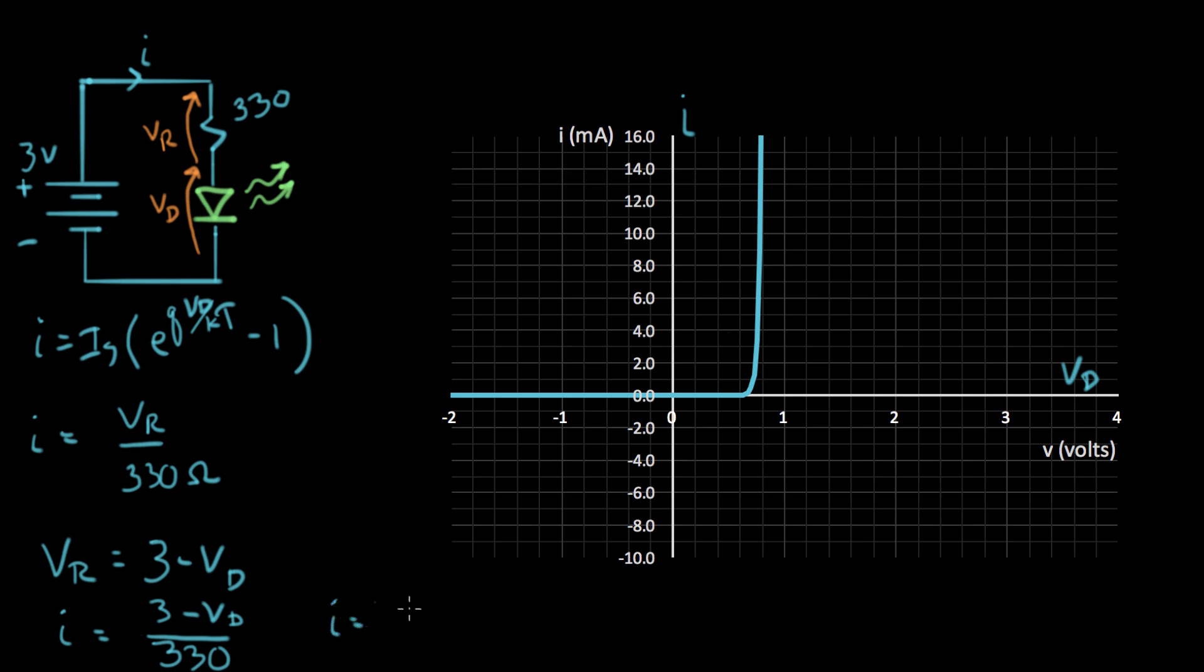The Ohm's law expression now becomes I equals VR is replaced with three minus VD all over 330 ohms. And let's work on this a little more. I equals three over 330 minus VD over 330. And this is starting to look like the equation of a line.